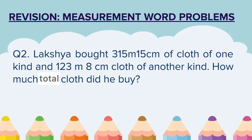Question 2. Laksh bought 315 meters 15 cm of cloth of one kind and 123 meters 8 cm cloth of another kind. How much total cloth did he buy? In this question Laksh is buying two kinds of cloth. The measure of each is given and we have to find the total length of cloth bought by him.